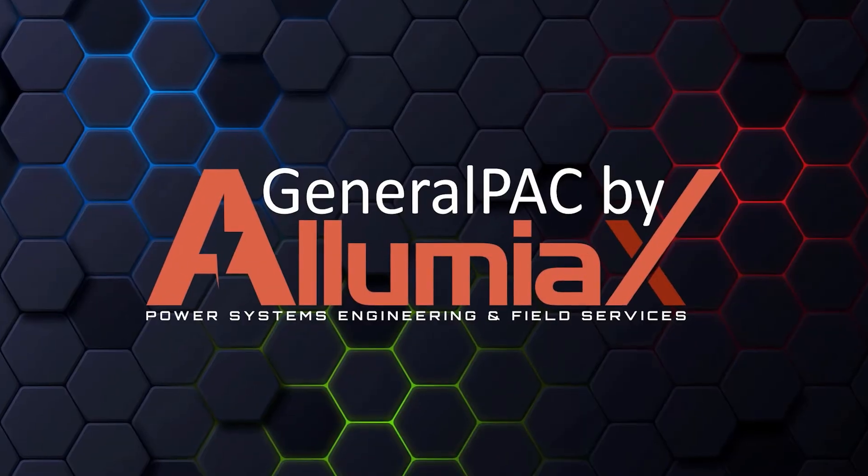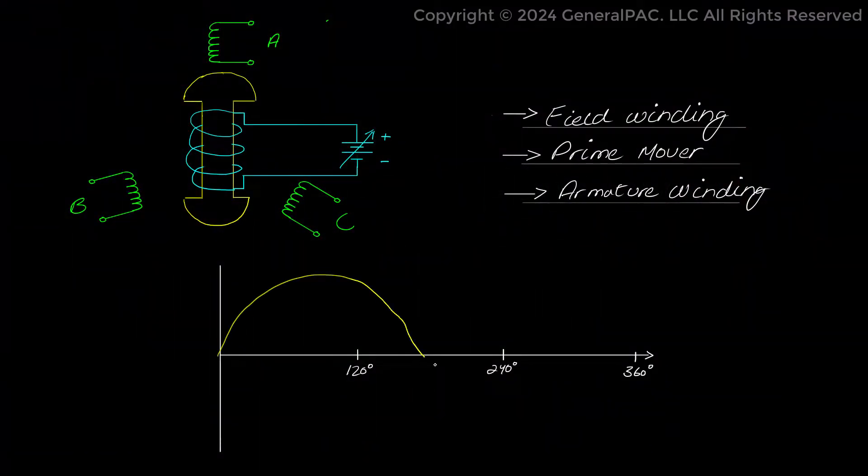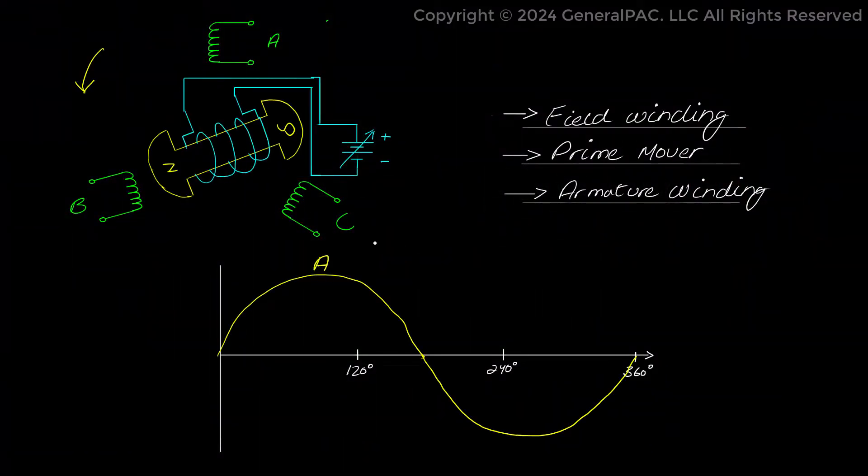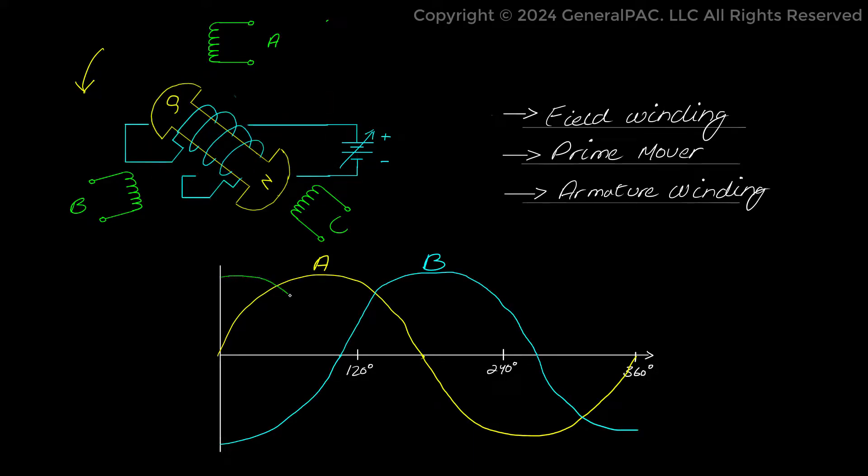Each phase voltage is 120 degrees apart from every other phase voltage because of the reason that three-phase stator windings are placed 120 degrees apart from each other. Then this AC output from stator is supplied to loads.